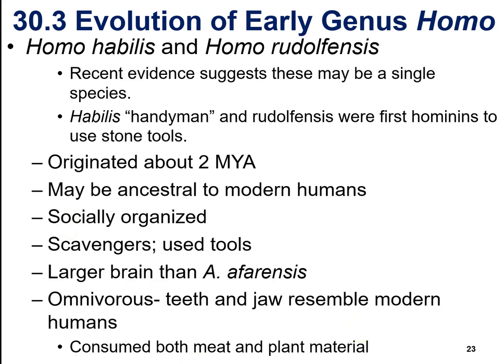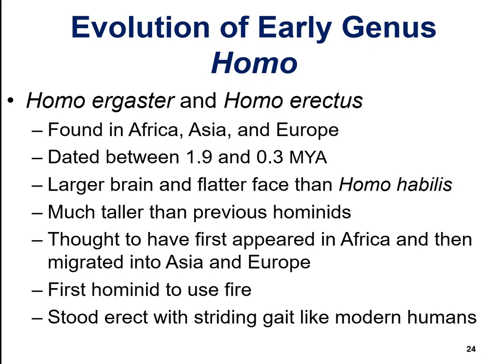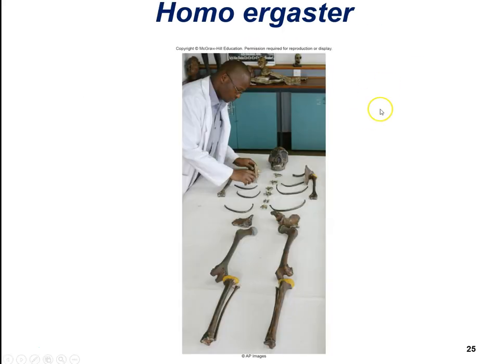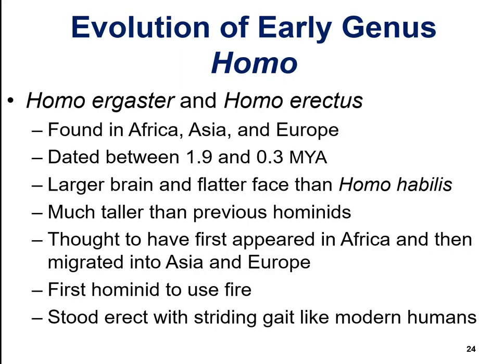More early Homo species: Homo ergaster and Homo erectus. Fossils have been found in Africa, Asia, and Europe, dating between about 1.9 and 0.3 million years ago. They had a larger brain and flatter face than Homo habilis — you can see the continuing evolution toward a larger, more complex brain and flatter face for improved peripheral vision. They were much taller and are the first hominids believed to use fire, with a gait much more resembling modern humans.